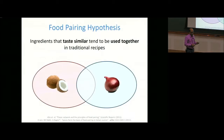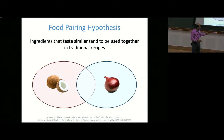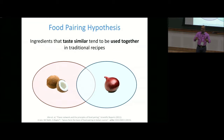Heston Blumenthal of the Fat Duck restaurant proposed the notion that ingredients which are very similar to each other in terms of taste and odor tend to go well with each other. The proposition was that if we could, in an abstract manner, characterize an ingredient and look at the overlap between them, we would be able to tell whether they will go together well or not. This was shown in a 2011 paper: when you look at recipes through flavor molecules, food pairing of ingredients does happen, and the principle holds largely true.